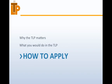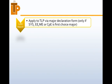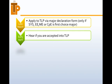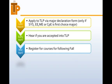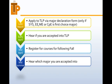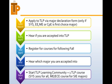Now let's talk about how to apply. In the spring of your first year, you'll be applying for your major, and at the same time on the same form, you'll indicate interest in the TLP. Early April, you'll hear if you're accepted into the TLP. Mid-April is when you register for courses for the following fall, including TLP courses like the learning community. Midsummer, you'll hear which major you're accepted into, and then in the fall, you'll start taking your classes.